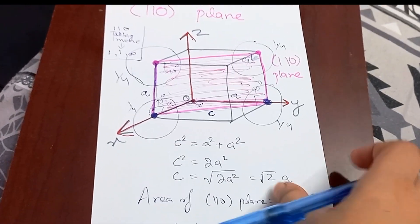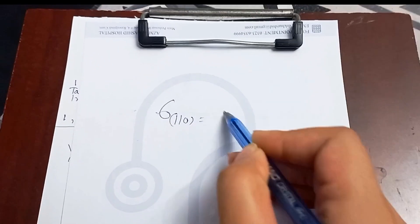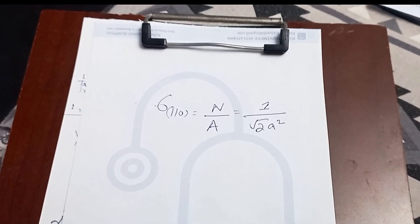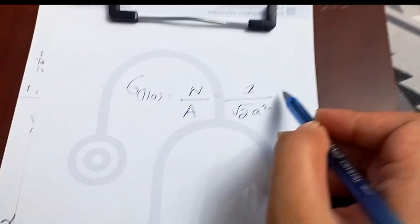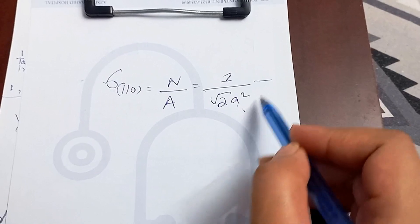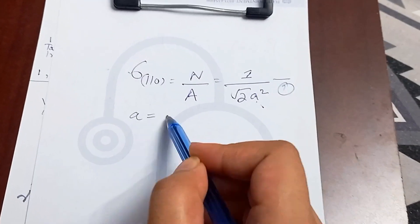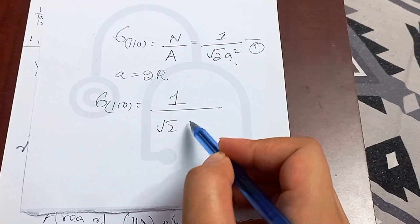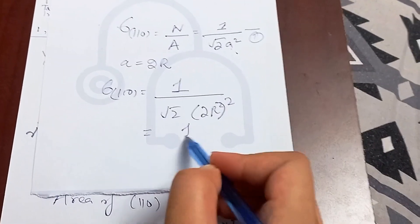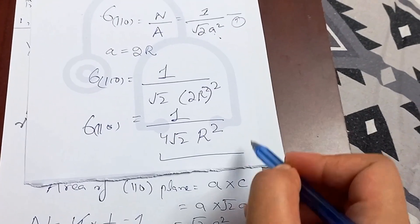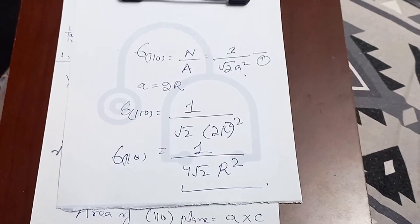The planar density for the (1 1 0) plane is Σ_110 = N / Area = 1 / (√2 · a²). To express this in terms of atomic radius, we substitute a = 2r, giving: Σ_110 = 1 / (√2 · (2r)²) = 1 / (4√2 · r²). This is the planar density in terms of atomic radius.